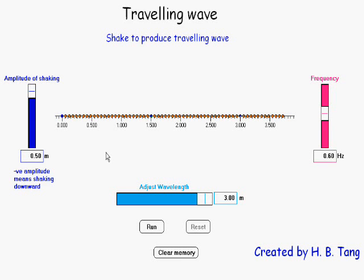This model simulates a traveling transverse wave. We can adjust the amplitude of the wave here, the frequency here, and the wavelength here.